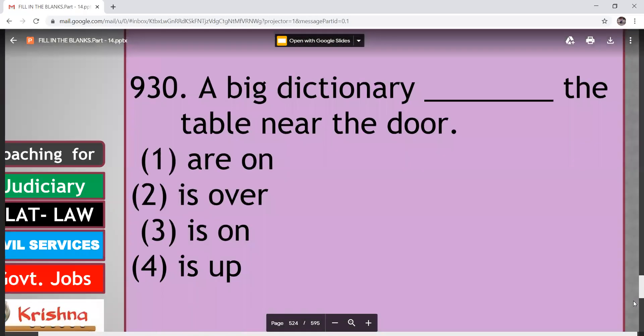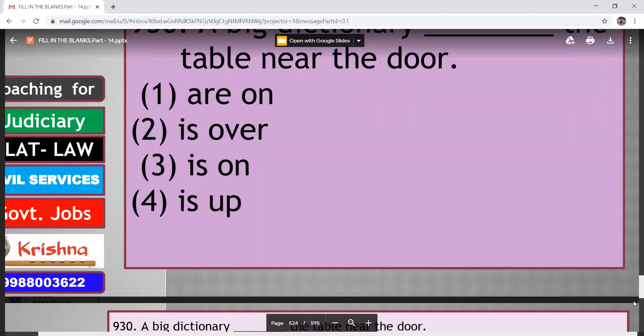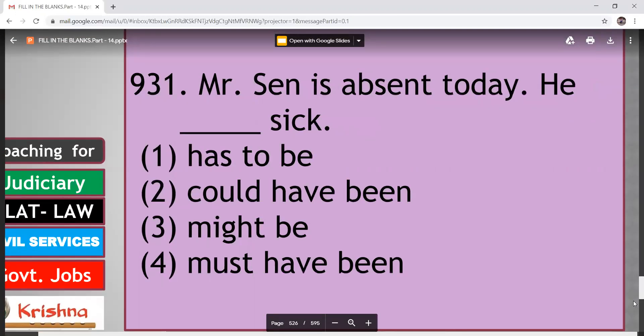A big dictionary dashed the table near the door. Are on, is over, is on, is up. So here answer is is on. A big dictionary is on the table near the door. Mr. Sane is absent today. He dashed sick. Has to be, could have been, might be, must have been. So here answer is might be. He might be sick.